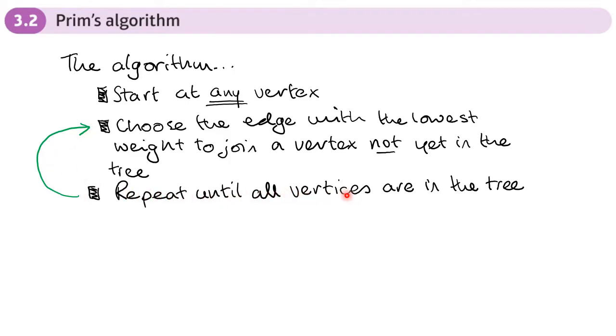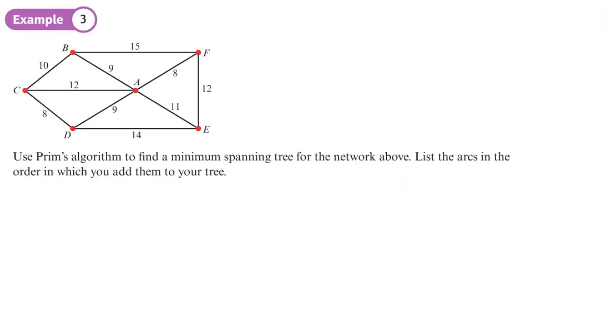until all the vertices from our graph are in the tree. So we're going to use Prim's algorithm to find a minimum spanning tree for this network here. List the arcs in the order in which you add them to your tree. Now, since C is on the left, I'm going to start at